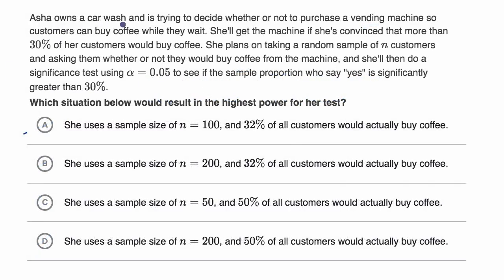Asha owns a car wash and is trying to decide whether or not to purchase a vending machine so that customers can buy coffee while they wait.